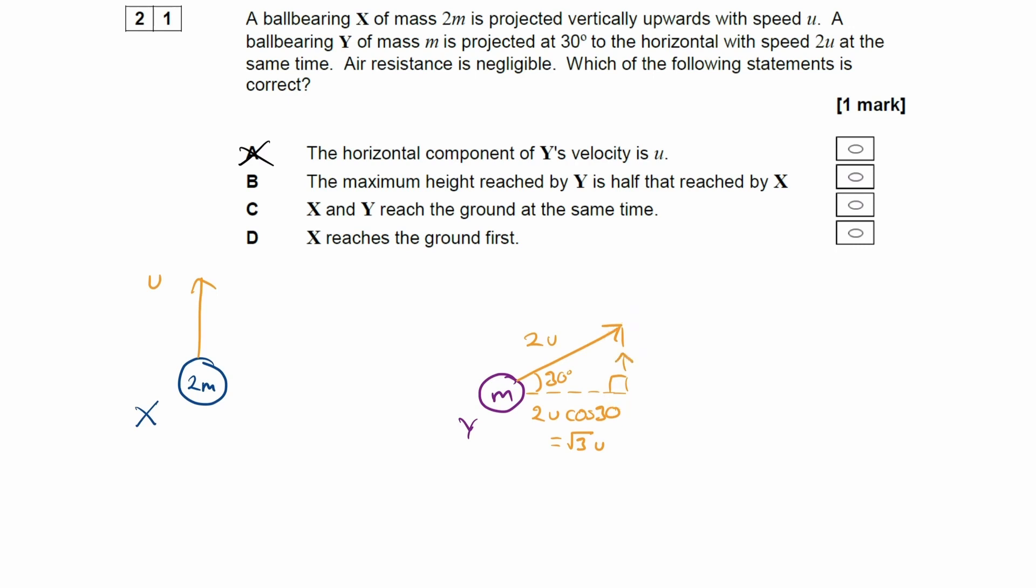Using Sohcahtoa, this is the opposite side. So it'll be 2u sin 30. 2 sin 30 is equal to 1. So this will just be u. So the initial vertical velocity of Y is the same as the initial vertical velocity of X.